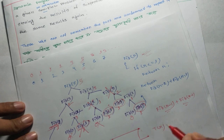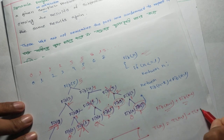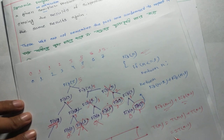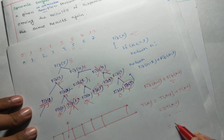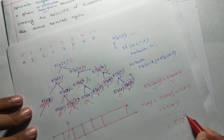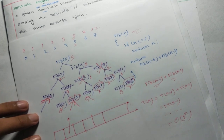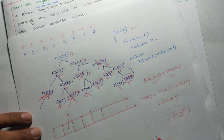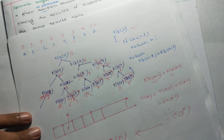The time complexity of this pure recursion is T(n) = T(n-1) + T(n-1) = 2T(n-1), which leads to exponential time complexity.